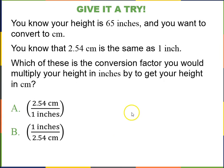So let's give it a try. Imagine you know your height is 65 inches, and you want to convert that to centimeters. And you know that an inch is the same as 2.54 centimeters. So you want to take 65 inches and multiply it times a conversion factor. So that conversion factor is either going to be 2.54 over 1 or 1 over 2.54. So which one is it, A or B? So please press pause on the video and resume when you think you have the answer.